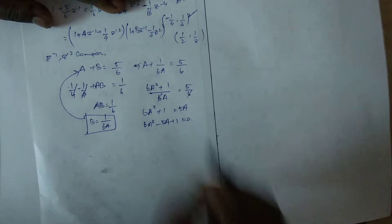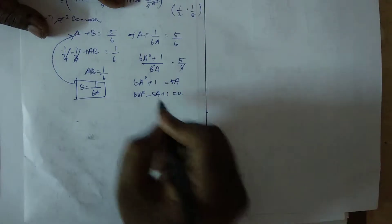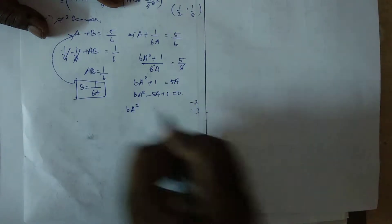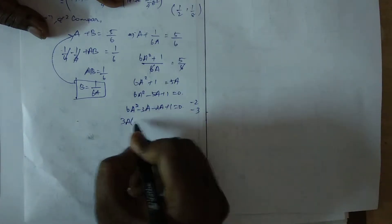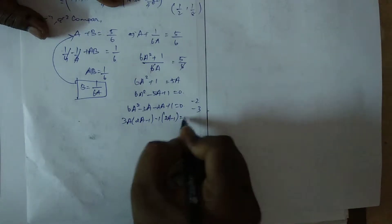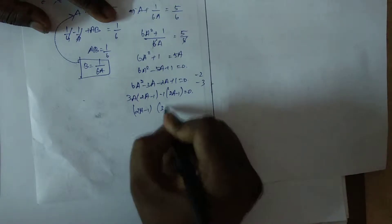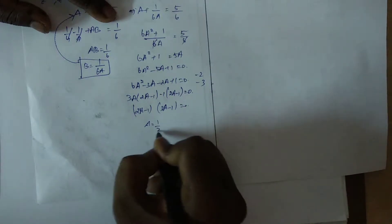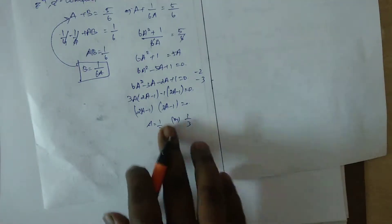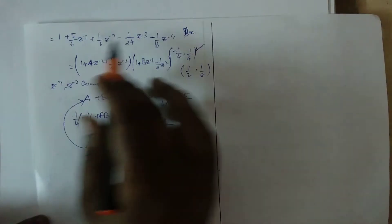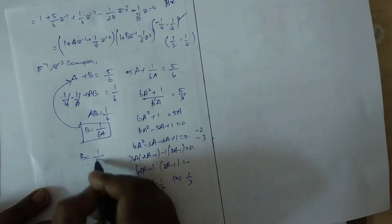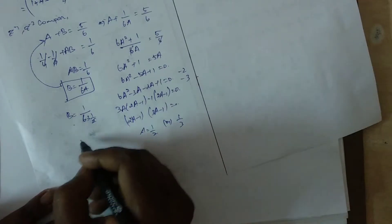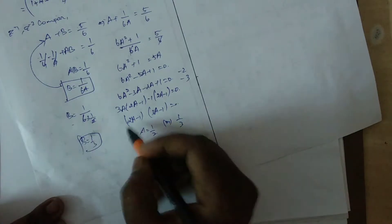So 6a² − 5a + 1 = 0: factoring gives (2a−1)(3a−1) = 0, so a = 1/2 or a = 1/3. Taking a = 1/2: substituting d = 1/(6 × 1/2) = 1/3, so p = 1/3. This gives us our two subsystems H1 and H2.